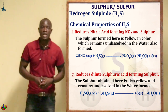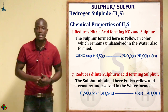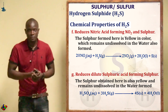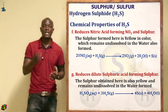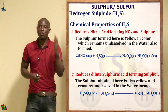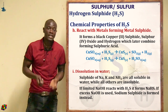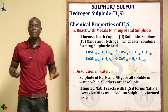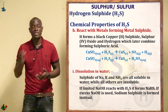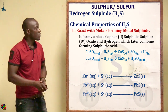It also reduces dilute sulfuric acid to sulfur — when reacted with sulfuric acid, yellow sulfur and water molecules are produced. It also reacts with metals to form a precipitate of metal sulfide; for example, reacting with copper sulfate gives copper(II) sulfide, sulfur dioxide, and hydrogen gas.